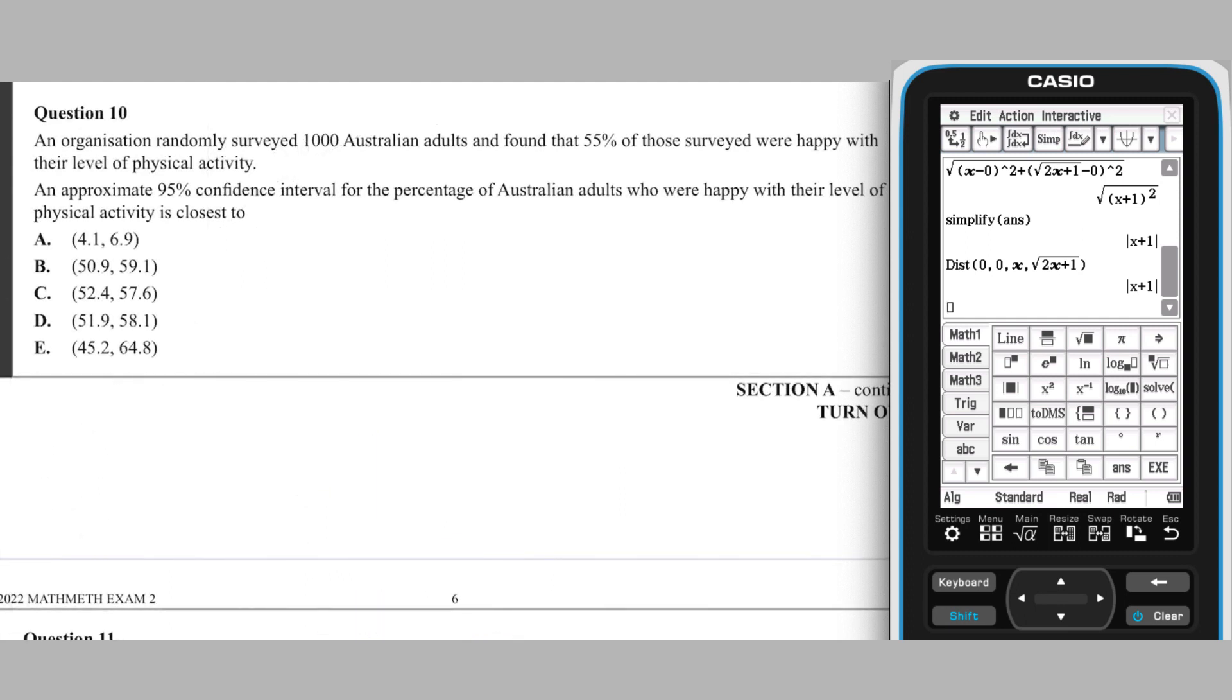Question 10 calls for the calculation of a 95% confidence interval for a population proportion, based on a sample of 1000, with a sample proportion of 55%.